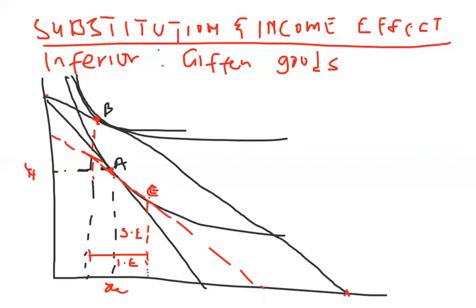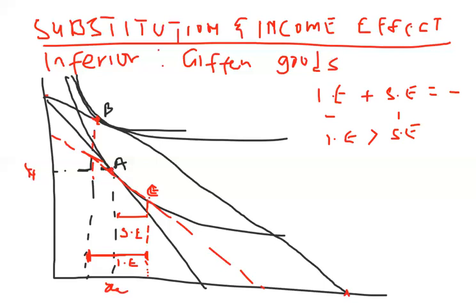Now this good is an inferior good. If it's an inferior good, then when there is an increase in your income you reduce your consumption of that commodity. So the income effect is going to be negative for an inferior good — it is reducing consumption by this margin. The substitution effect, because of the fall in price, is going to cause X1 to increase, so the substitution effect is positive.